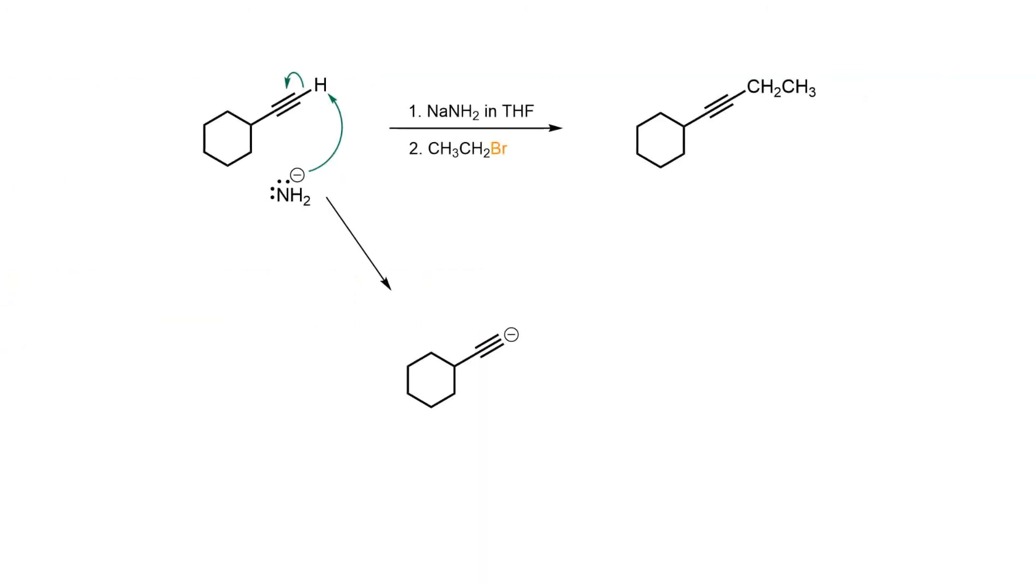Terminal alkynes have a pKa of approximately 25, so a very powerful base is needed to ensure complete deprotonation. Sodium amide is a good choice since its conjugate acid has a pKa of 38, thereby ensuring the acetylide anion is formed completely.